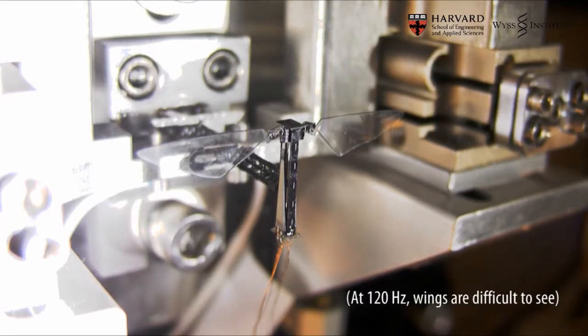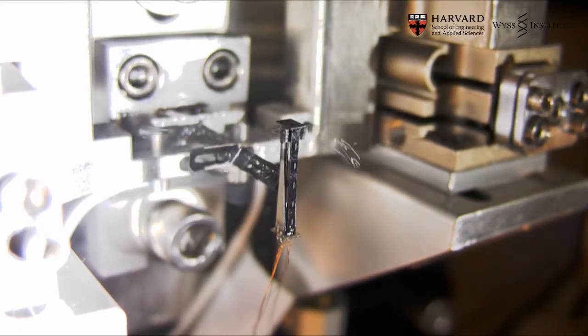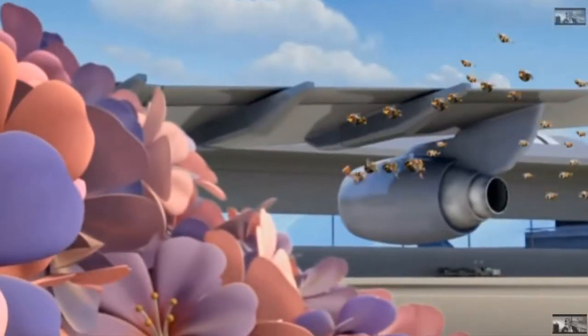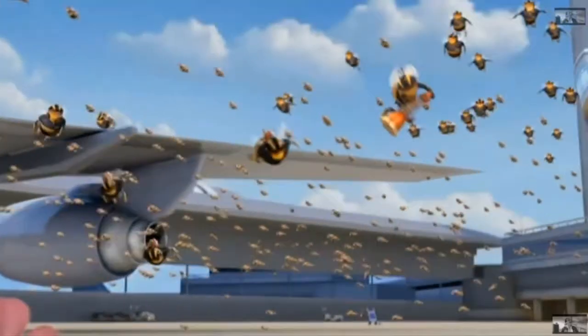When fully developed, the RoboBees will fly from plant to plant, spreading pollen just like an actual bee. The large quantities of these robots will allow them to substitute entire hives worth of bees.